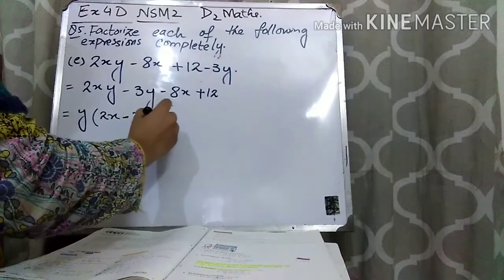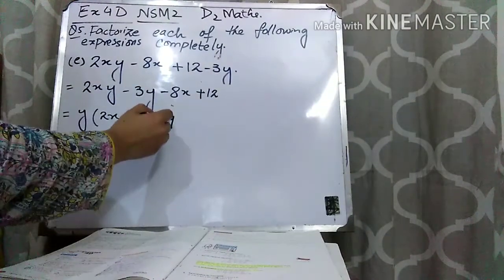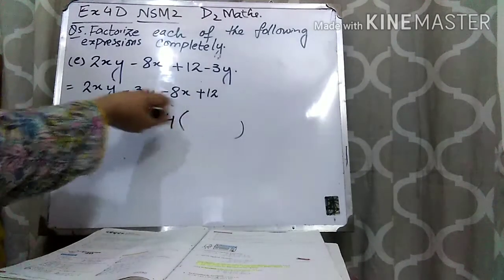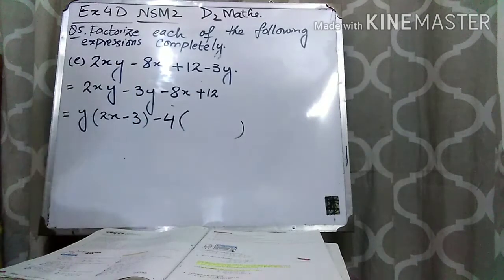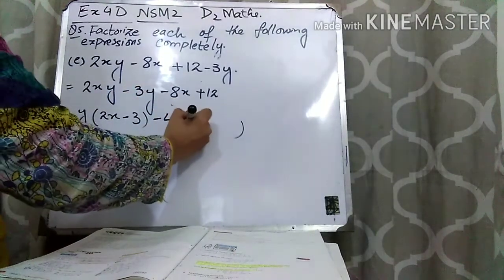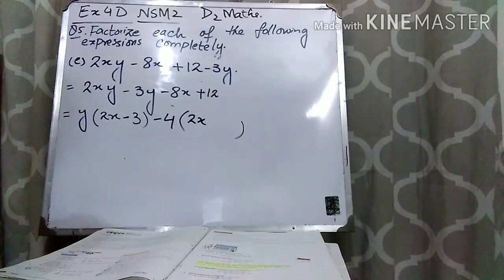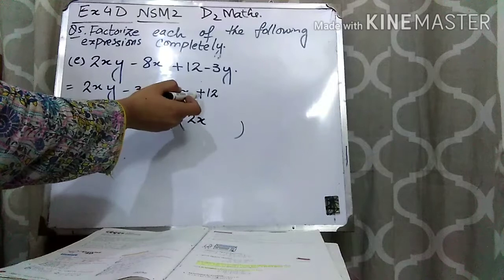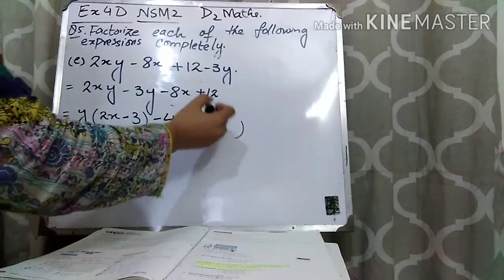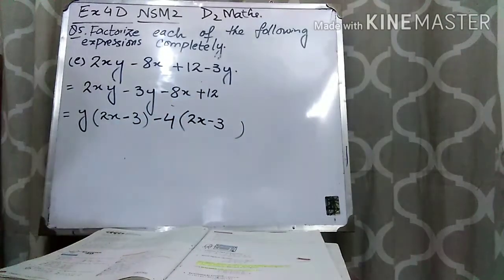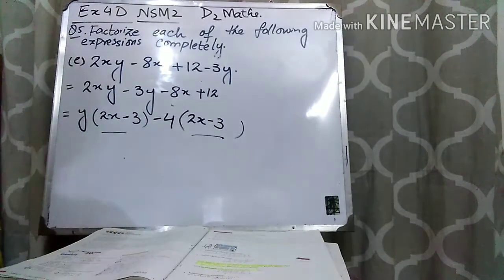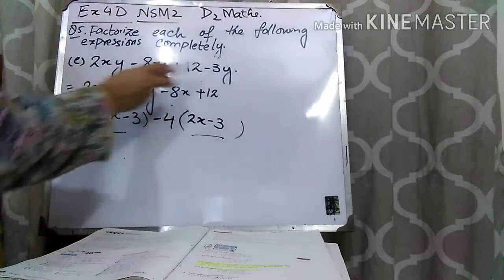So I will take minus 4 common. Here there is a minus sign and I am taking it common. When I close the bracket, since I am taking minus common, the signs inside the bracket will also be changed. I am taking 4 common: 4 times 2 is 8, so 2x. And since there is a minus sign outside the bracket, this plus will become minus and 4 times 3 is correct. So here you can see that the brackets are the same.